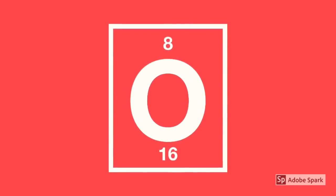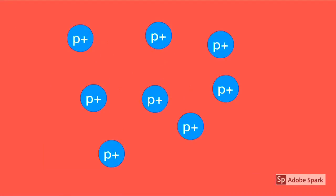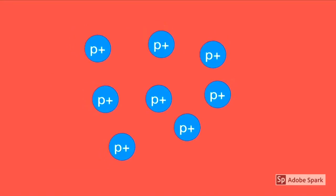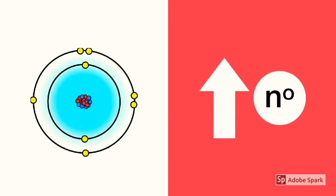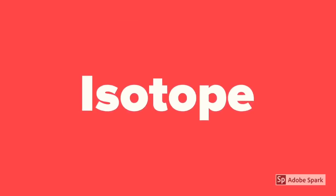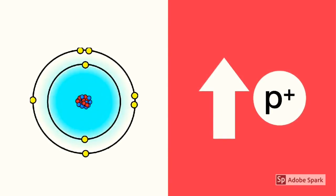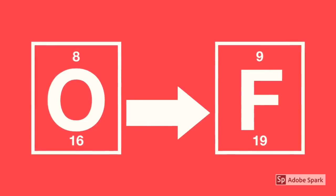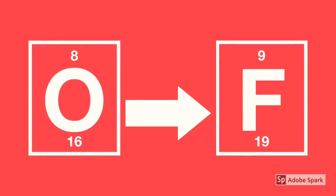Say you're looking at oxygen on the periodic table. The number at the top is its atomic number, and it tells you the amount of protons an element has in its nucleus. The important thing to know about protons is they dictate what element you're looking at. If an atom was given more neutrons, it would become a different isotope of that element, but still be that element. However, if you somehow added a proton to it, it would become the next element. In the case of oxygen, it would go from the eighth element to the ninth element, fluorine.